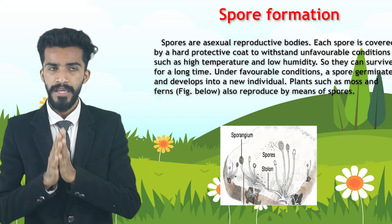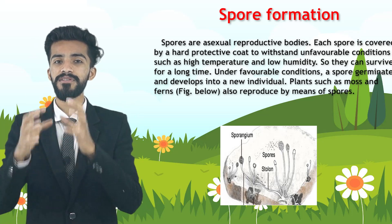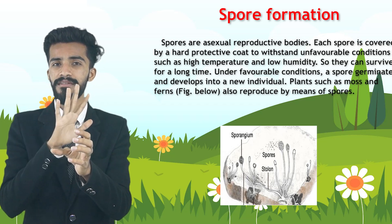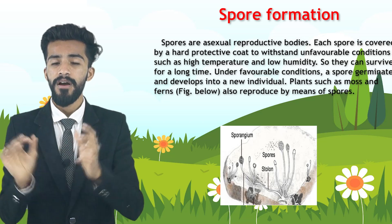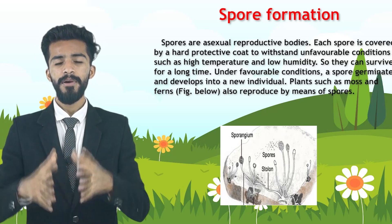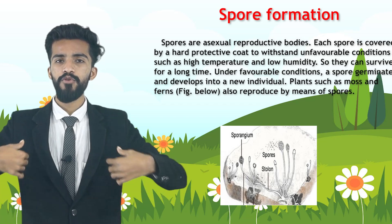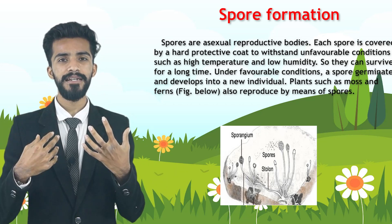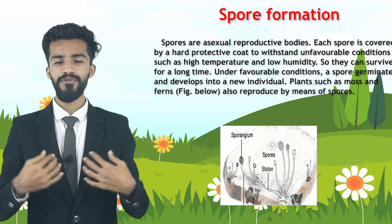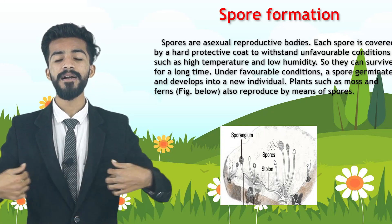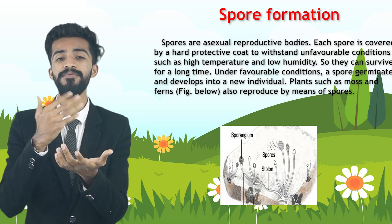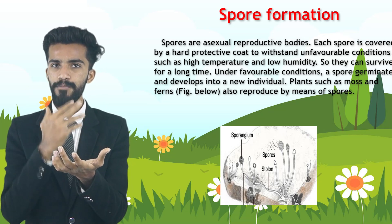Each spore is covered with a hard protective layer — just like our skin covers our body, a protective layer covers the spore. This is to withstand unfavorable conditions such as high temperature and low humidity. Just as we put on a coat in extreme weather, spores have a protective coat to handle unfavorable atmospheric conditions.